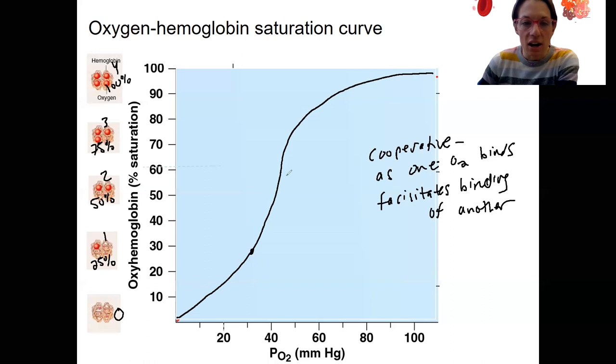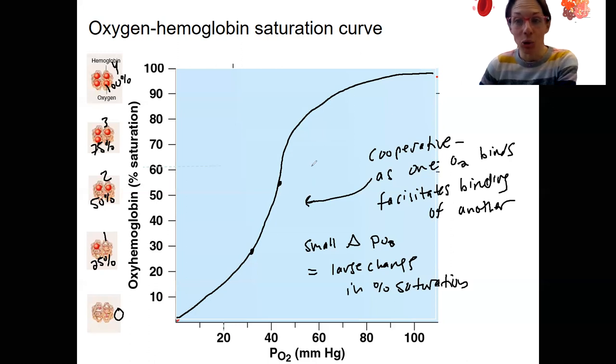The second oxygen is not going to take as big a change in partial pressure. There's this big range here where the curve is steep. A small change in partial pressure of oxygen equals a large change in percent saturation. It's in this middle range here where we want to be able to have unloading and loading of oxygen occur. It is going to taper out at the top up here for that final oxygen molecule that's bound.